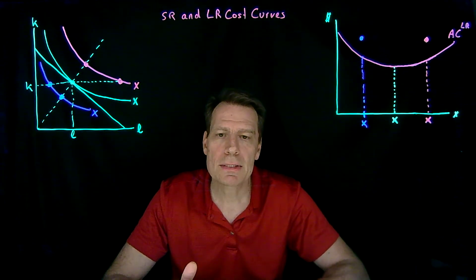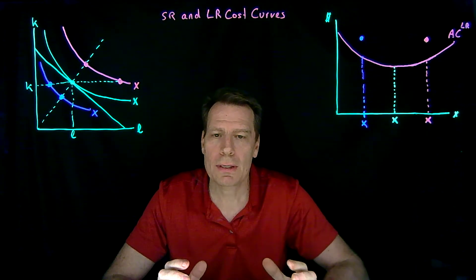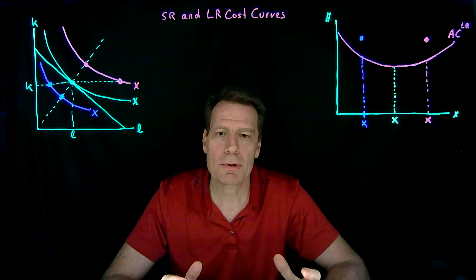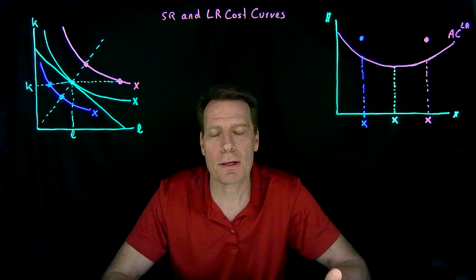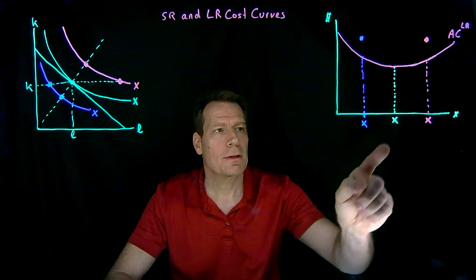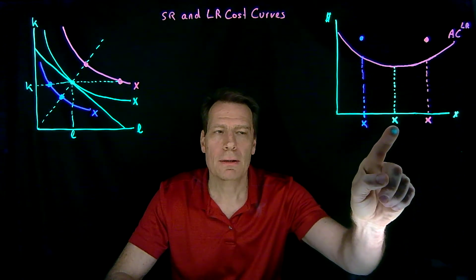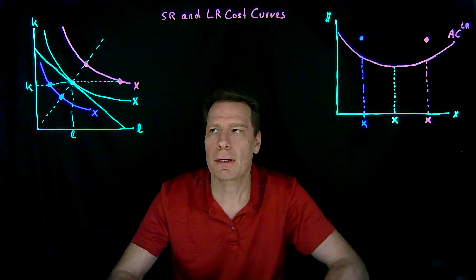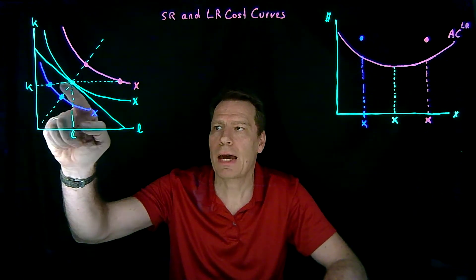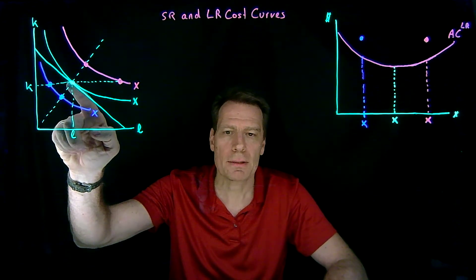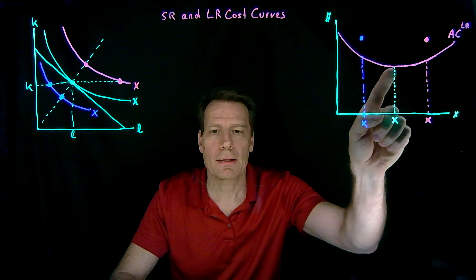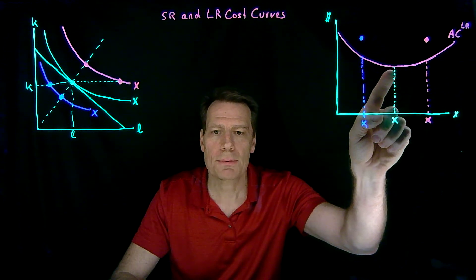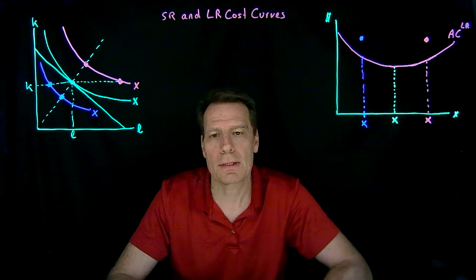The only place where the short-run expense is exactly the same as the long-run cost is when we have exactly the right amount of capital — and that's when we're producing this quantity. When we're producing this quantity and we're fixed at this level of capital, we have exactly the right amount of capital. So the long-run and short-run points are exactly the same, and the short-run expense will be exactly the same as the long-run average cost.